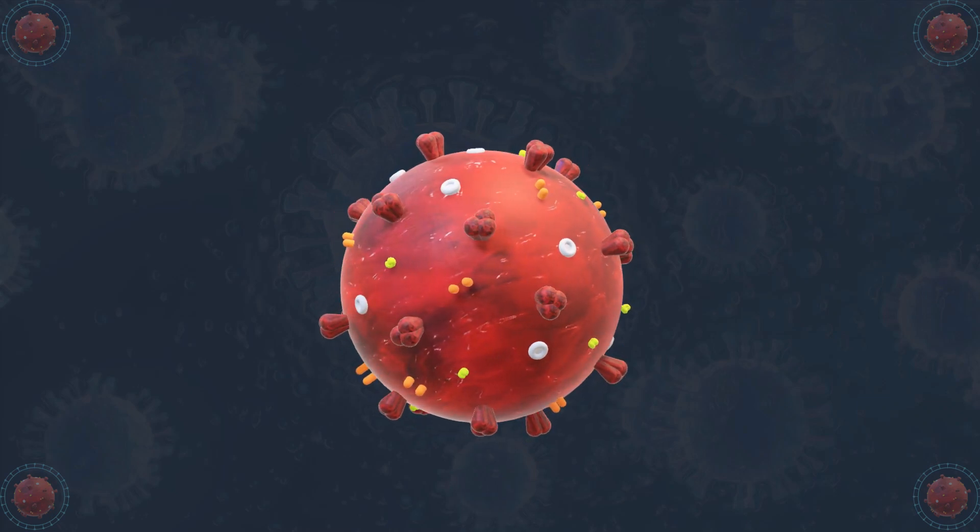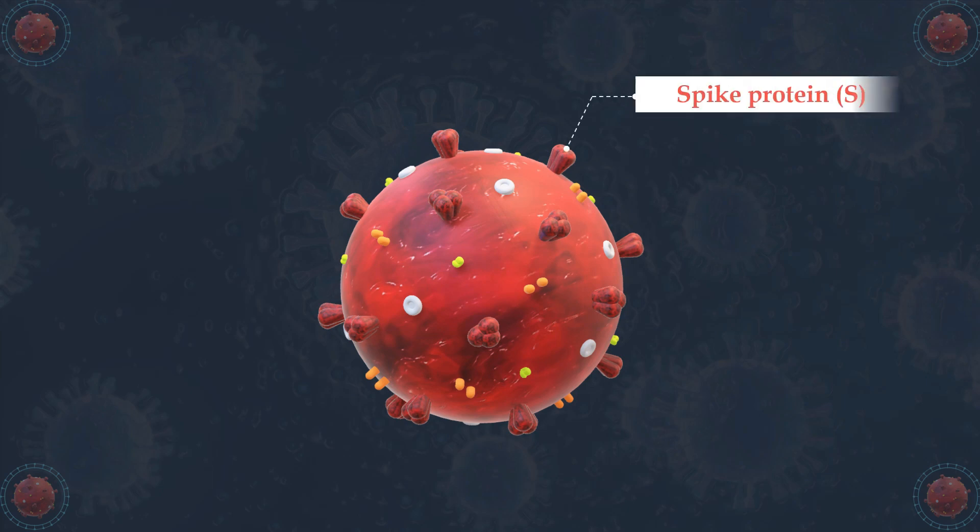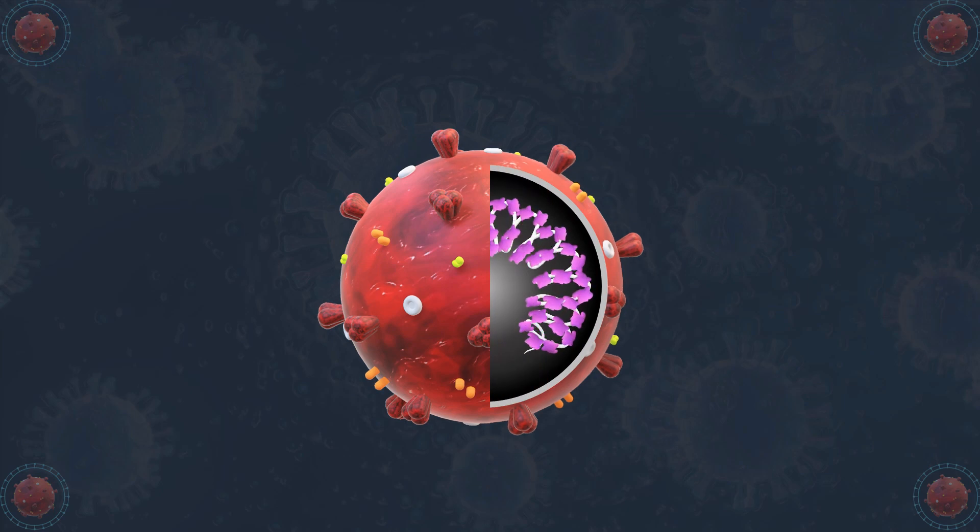Like other coronaviruses, SARS-CoV-2 has four structural proteins: the spike protein, membrane protein, envelope protein, and nucleocapsid protein, which holds the RNA genome.